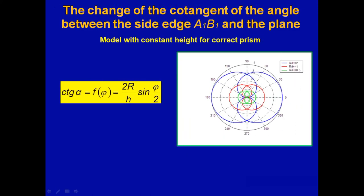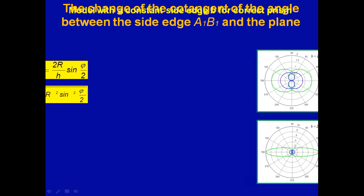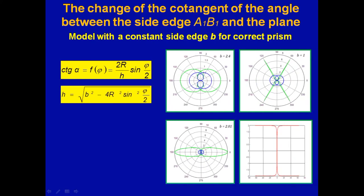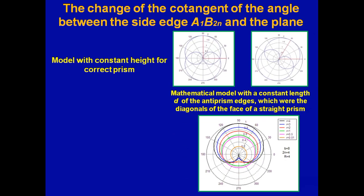We also proved that the cotangent of the angle between the side edge and the base for the model with a constant height satisfies the equation of Guido-Grande roses. And for the model with a constant length of the side edge, the cotangent satisfies the equation of different Guido-Grande rose. We also investigated the cotangent of the angle between this diagonal and the base.